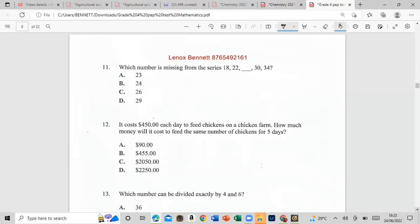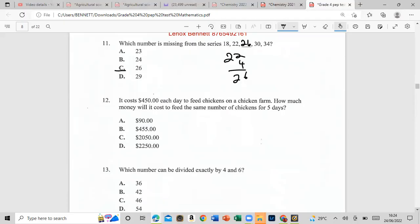Which number is missing from the series? We have 18, 22, a number should be there, then 30, then 34. So what is our job? Our job is to find out what number they are adding each time. We are at 18, how did we get to 22? That would be four. So each time we are supposed to add four. So 22 plus four would give us 26. So our answer would be 26. And we can check it, 26 plus four gives us 30, 30 plus four gives us 34.